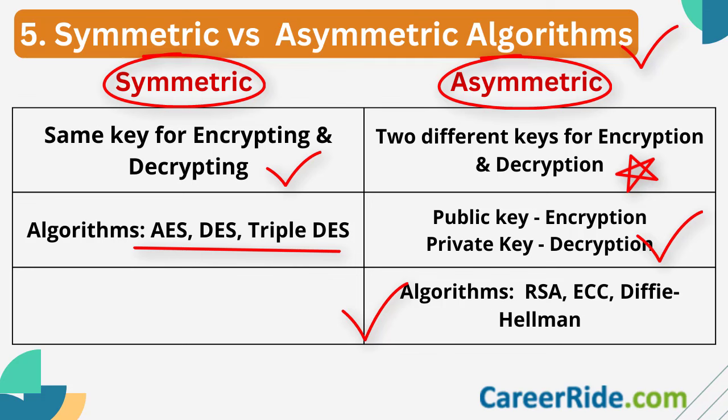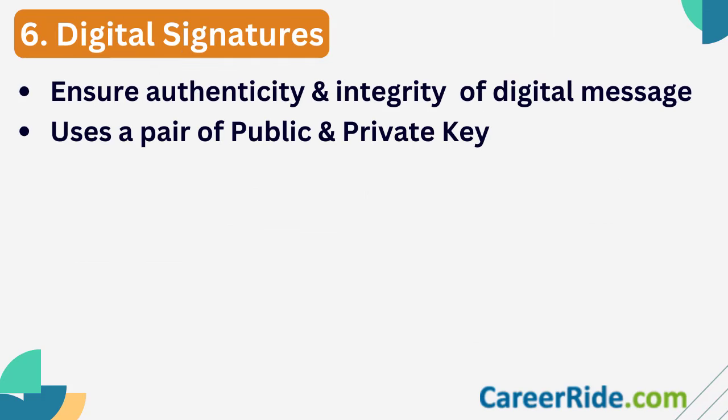Some common algorithms used for asymmetric encryption are RSA, Diffie-Hellman, and elliptic curve cryptography. This kind of encryption is used in digital signatures, e-commerce, etc. What is a digital signature? It is a cryptographic technique that helps in ensuring the authenticity and integrity of the digital message or document on which the digital signatures have been put.